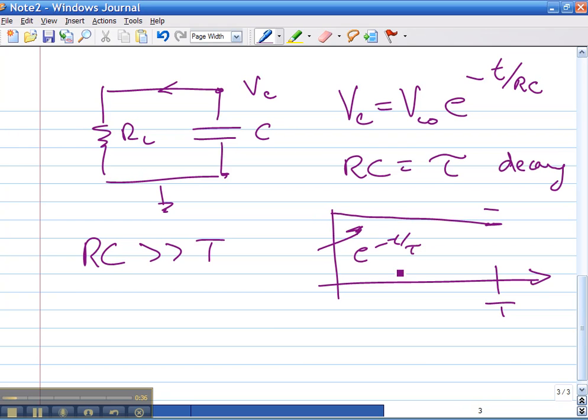All right, so that means from here, we're looking over the time period given by t. So e to the minus t over RC is going to be what we want to take a look at, and that's approximately equal to 1 minus t over RC for the case where this is small.